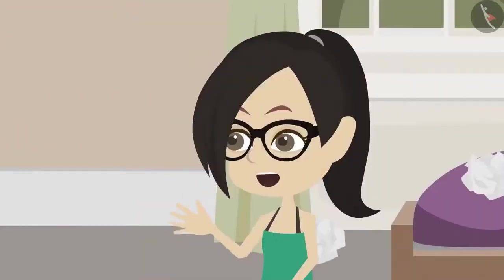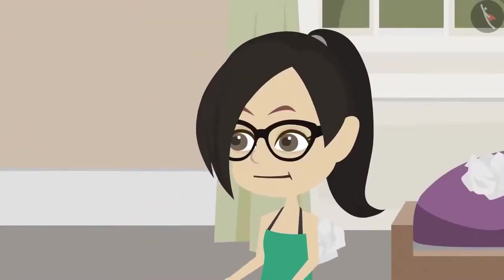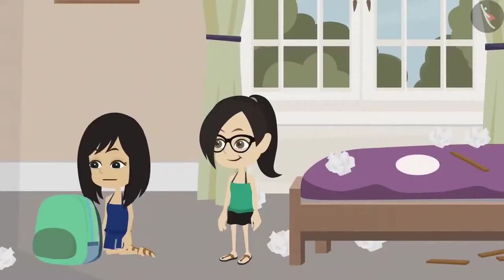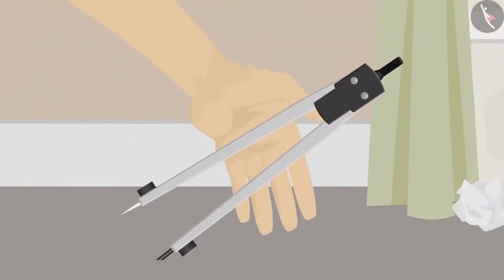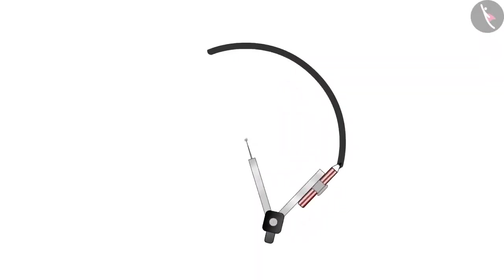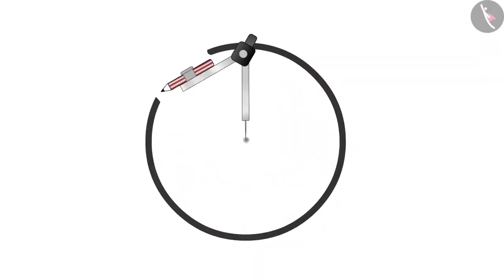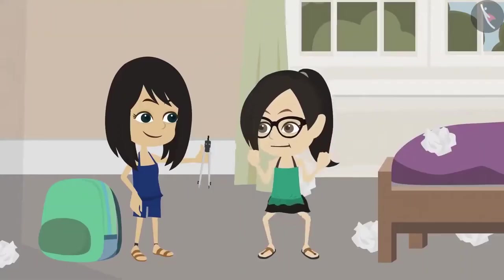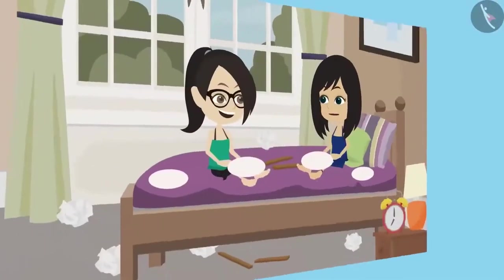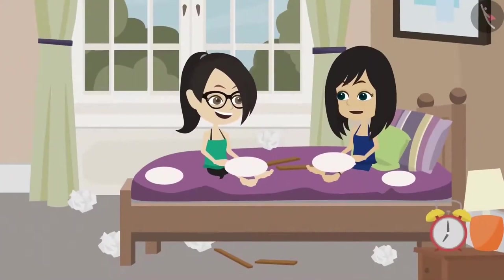I could not find my compass so I had to draw a circle like this. No problem — I have a compass. Let's make spinning tops of different sizes. Look, there is a mark in the center after making it with a compass. Now it has become easy for us to make a spinning top. Now we will make many spinning tops.